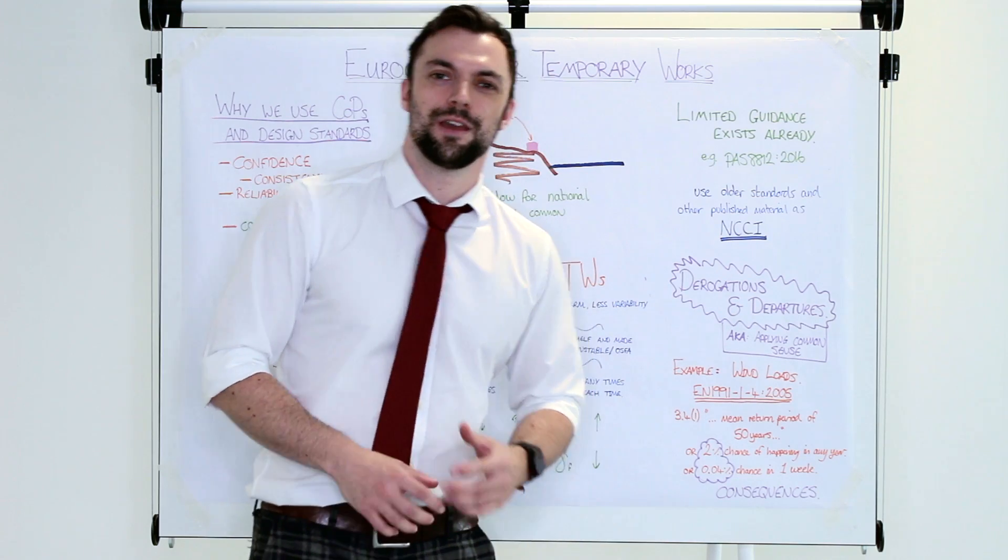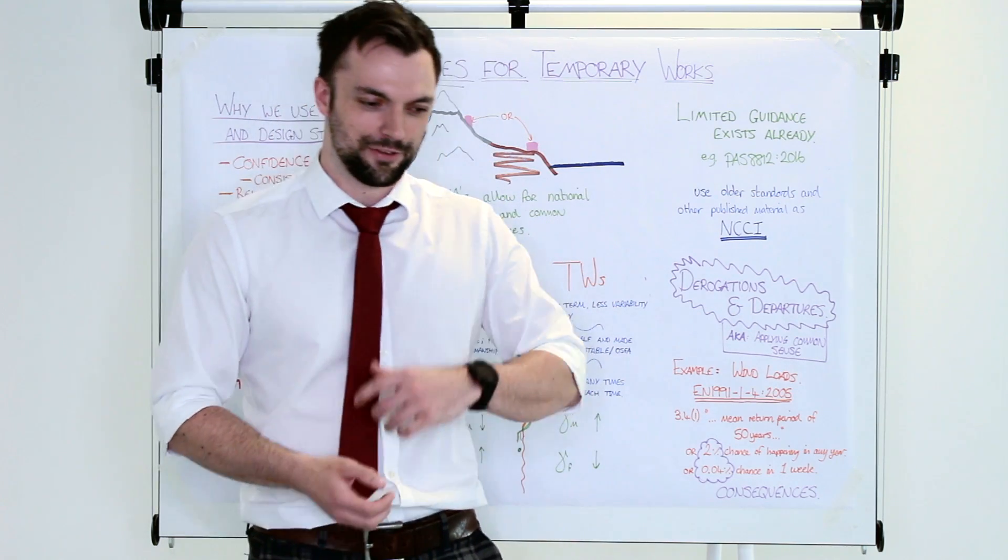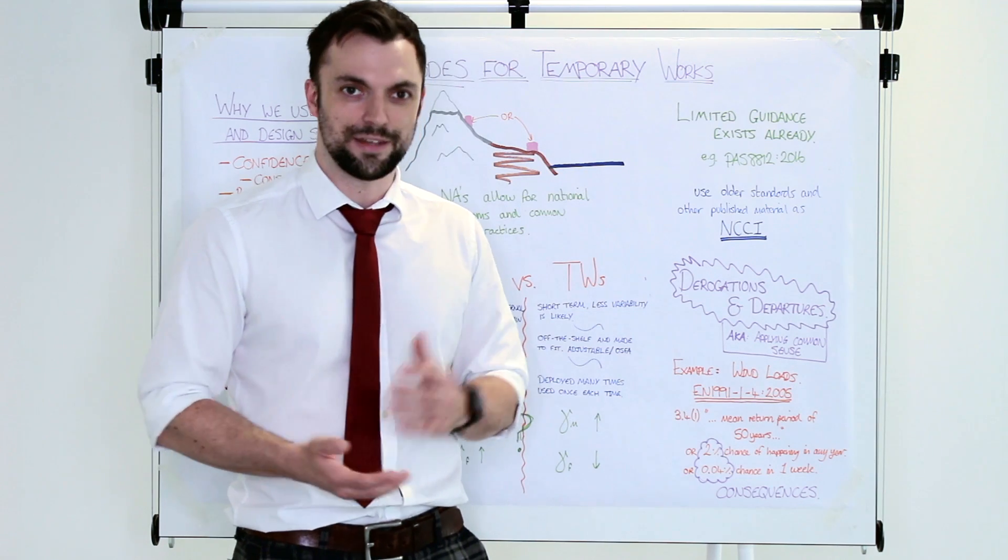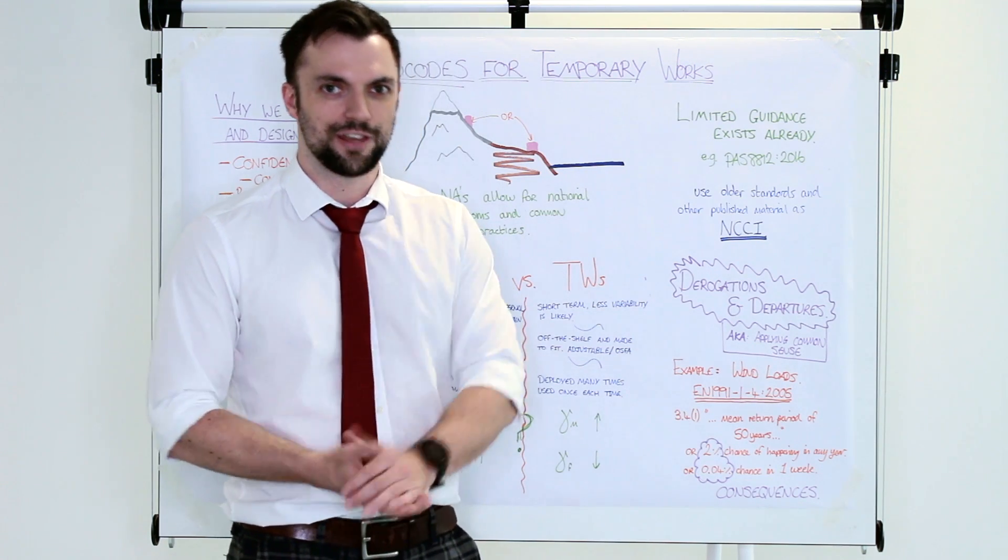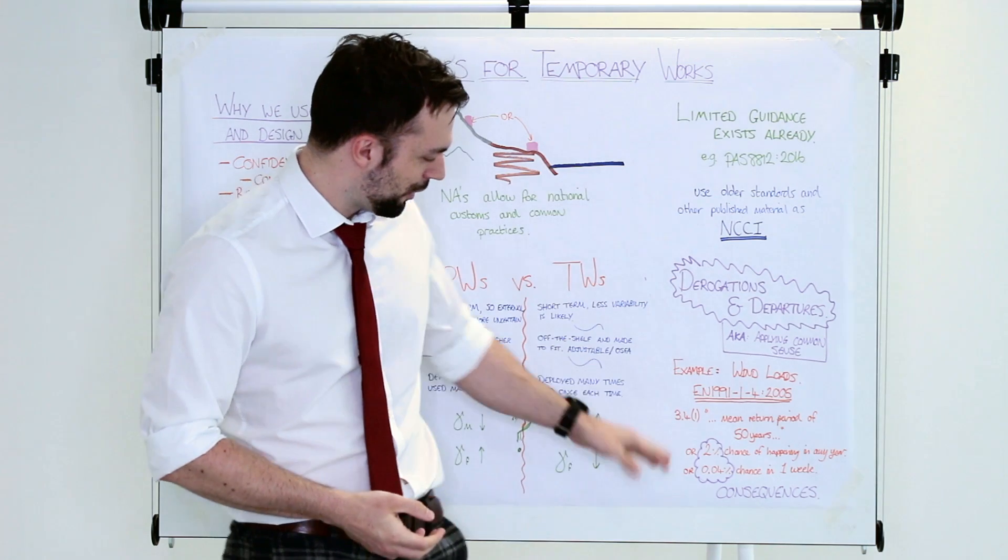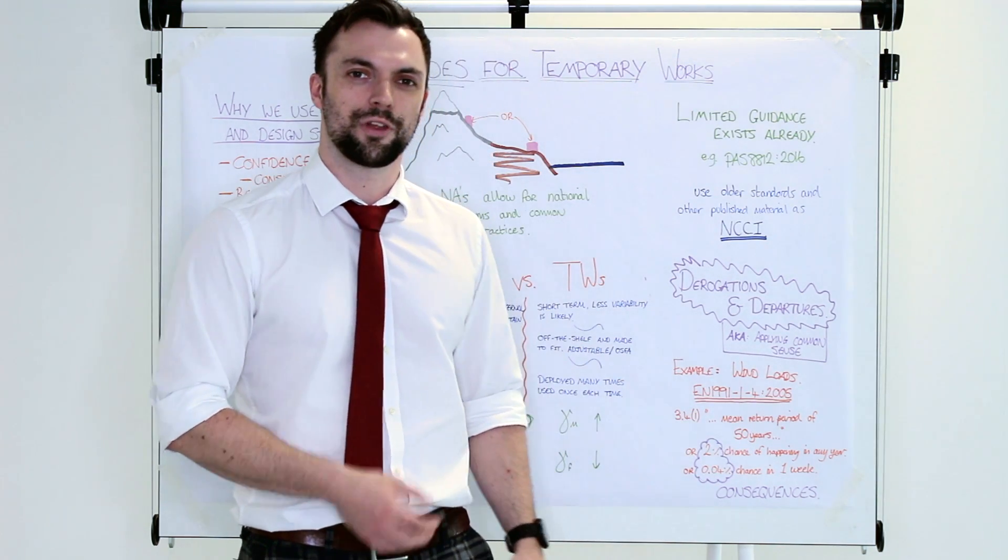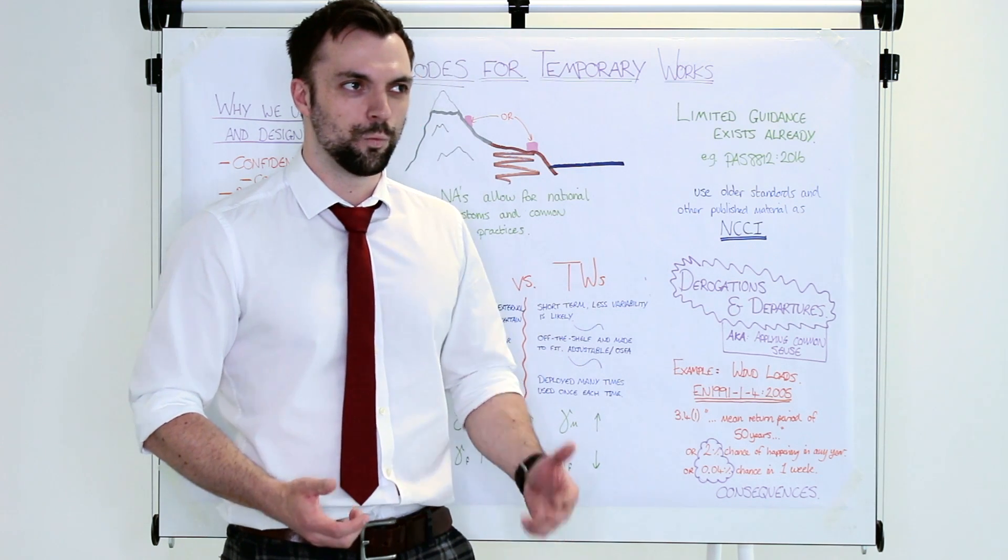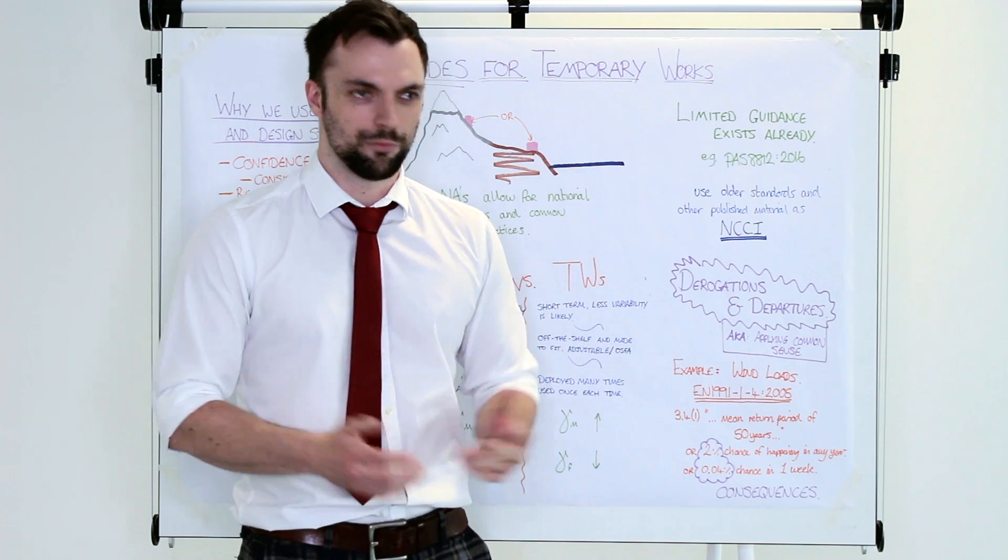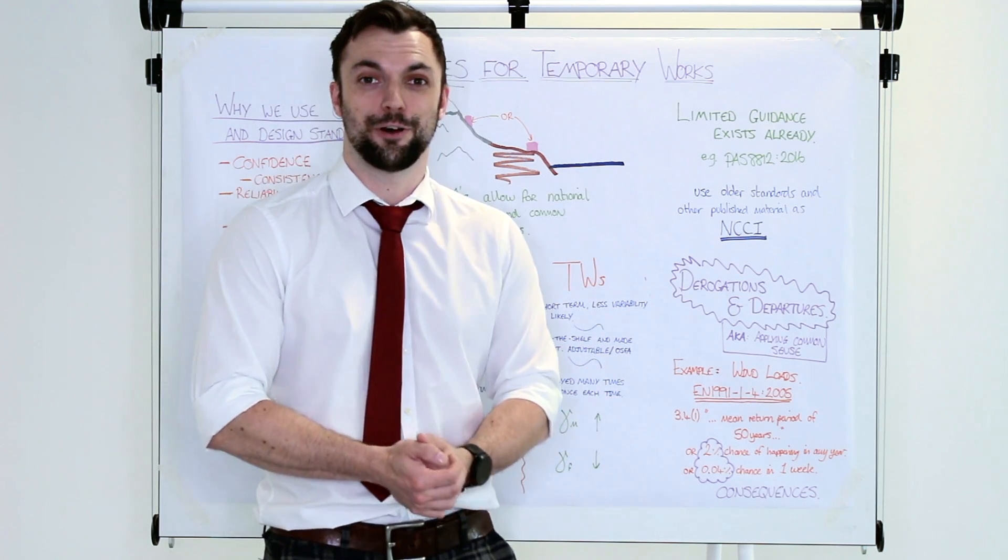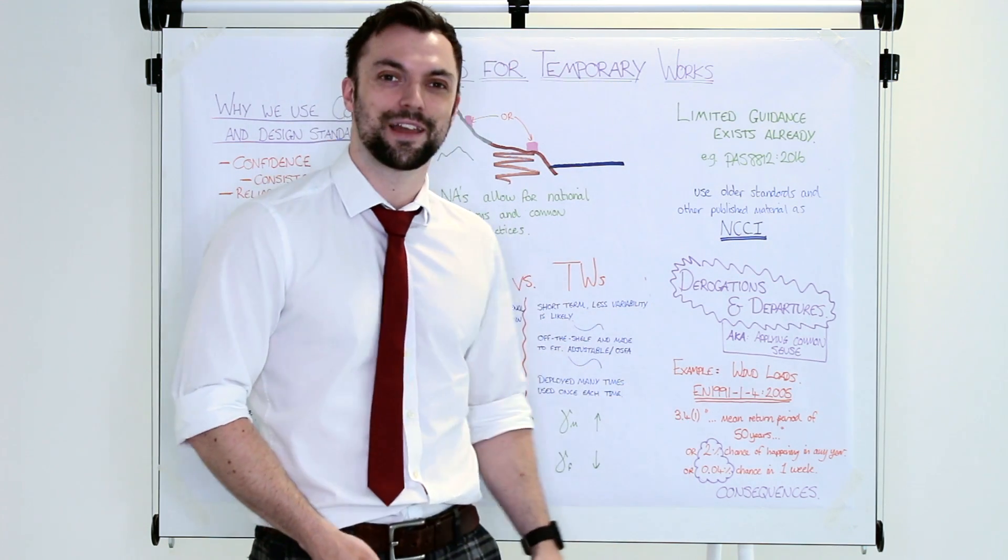Think about the consequences. If we were designing something that if this storm was to happen, everything would collapse, there would be deaths and there would be injuries, then potentially we would strengthen everything to make sure that that never happened. But if the consequences of this 50 year return period were that a handrail fell over and we'd have to repair a few bits of scaffolding, would we actually be worried of that happening once in a while, every few years. Perhaps the kit would even be written off before it ever gets to the point where it meets that kind of storm.